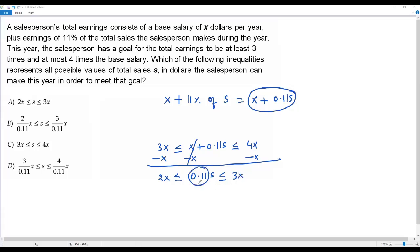To solve for S, I have to get rid of this 0.11 multiplied by S. For that, I divide each term by 0.11. So 2X over 0.11, then 0.11 will cancel out. So 2 over 0.11 times X less than or equal to S less than or equal to 3 over 0.11 times X.